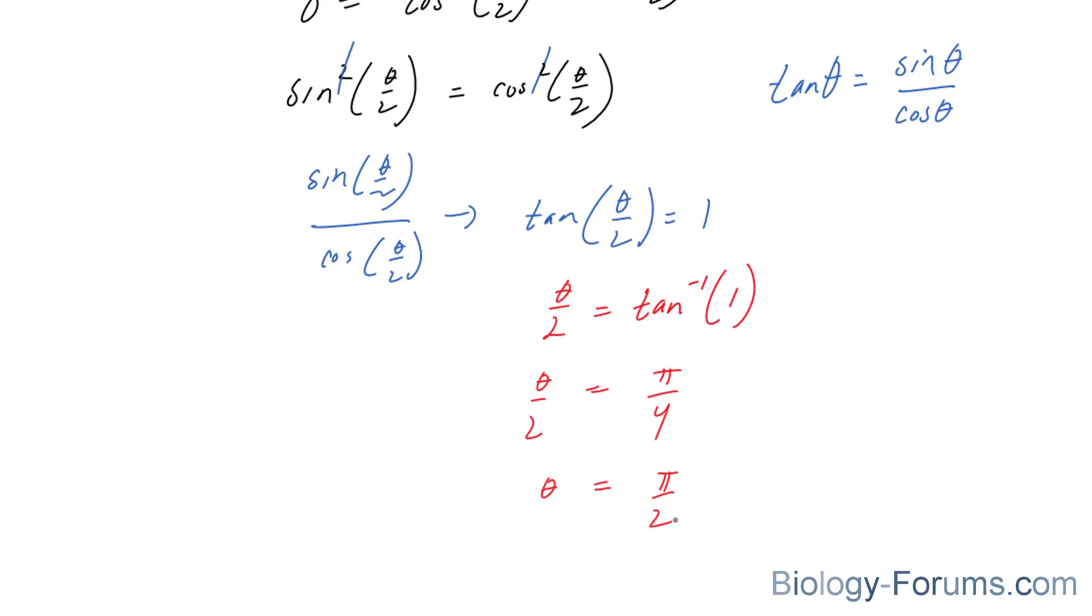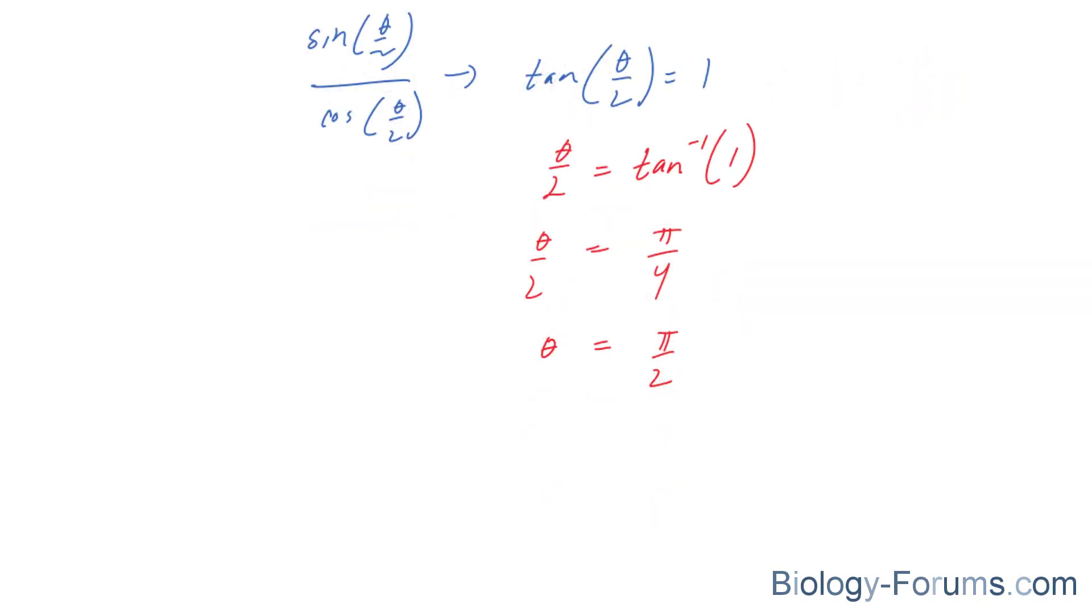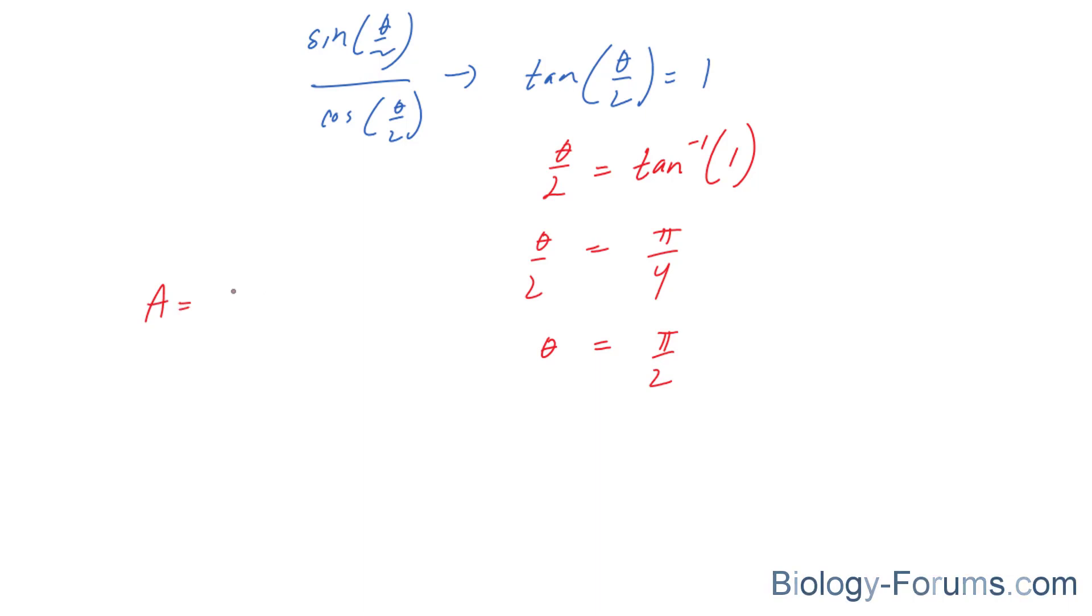Now, we have to find out if 90 degrees will give you the maximum area. The only way to do that is to evaluate this in our original equation. Our original equation looked like this: area was equal to nine times sine.